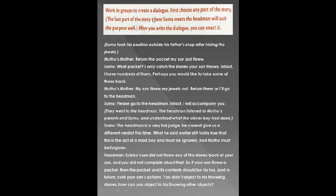Let's see what I have written. I have written: 'Somu took his position outside his father's shop after hiding the jewels.' The situation is where Somu had hidden the packet of jewels in the bag of rice and then came outside the shop to catch the stones Muthu was throwing. The situation is written in a bracket first as an introduction, then we start with the main dialogue. The first character is Muthu's mother, who came to Somu just after he put the jewellery packet in the rice bag.